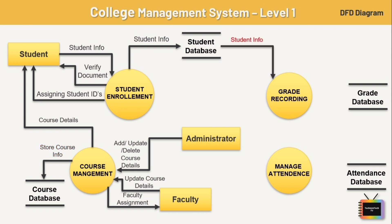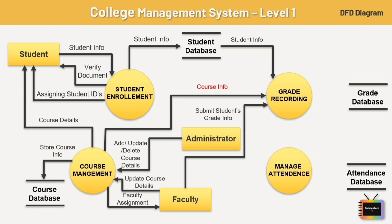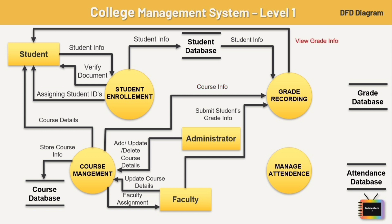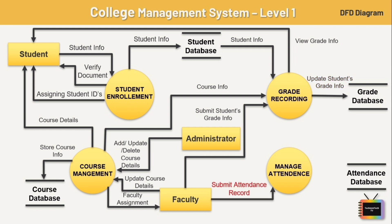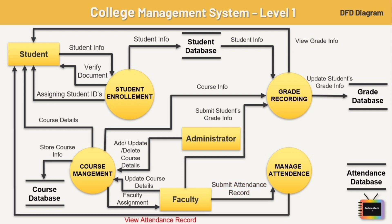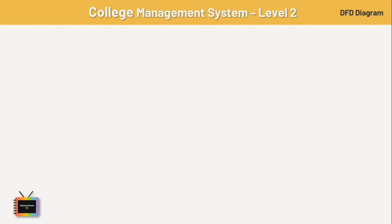For grade recording, the process accesses the student database to get student information. Faculty submit students' grade information to the grade recording process, which also needs course details to process the grade report. Once prepared, students can view their grade info and it is updated in the grade database. Faculty also submit student attendance records to the attendance management process, which verifies them so students can view their attendance, and the record is updated in the attendance database.